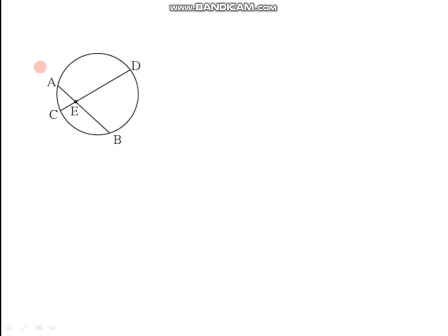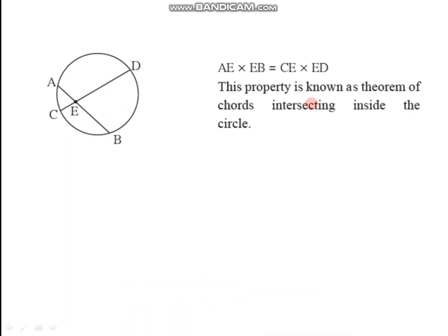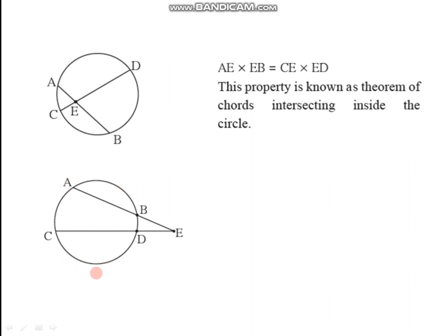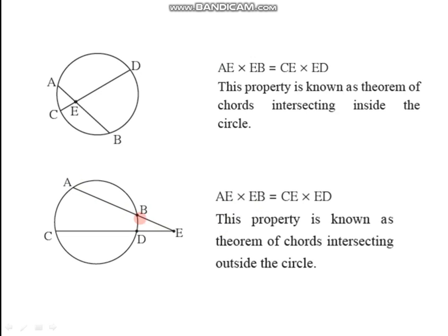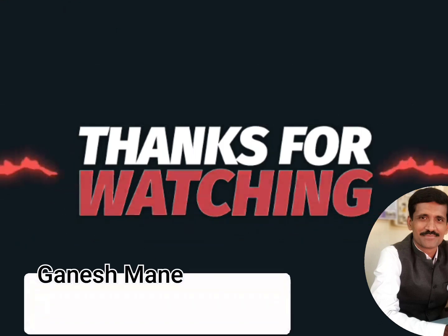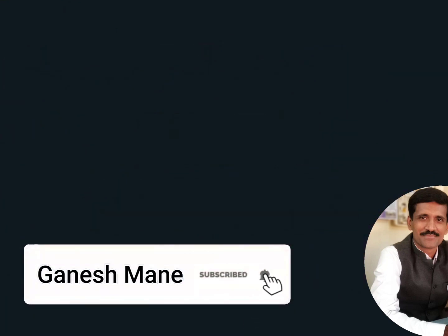To revise: if chord AB and chord CD intersect each other at point E which is inside the circle, then AE into EB equals CE into ED — this is the theorem of chords intersecting inside the circle. If point E is in the exterior of the circle, the same product property AE into EB equals CE into ED holds — this is the theorem of chords intersecting outside the circle.